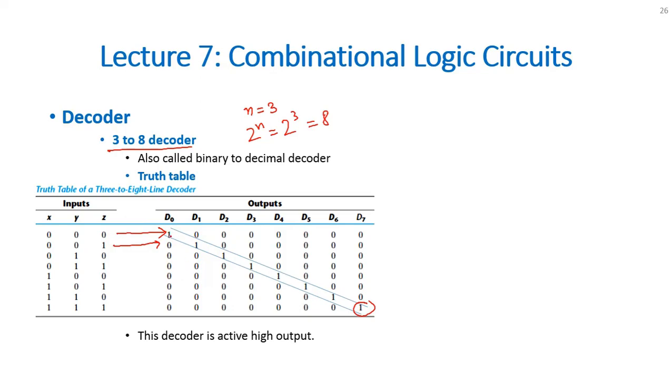Keep in mind that this decoder is active high output because when certain code is detected this output will remain high, all other outputs will remain 0. That is why this decoder is active high output.